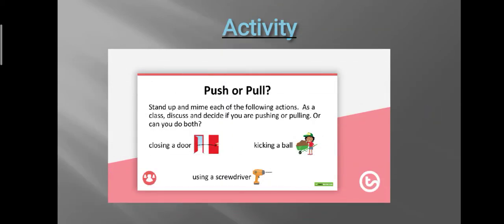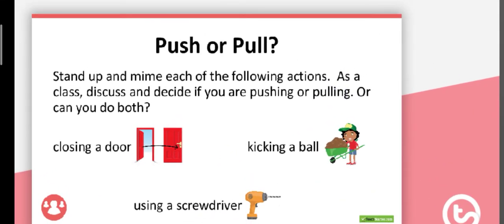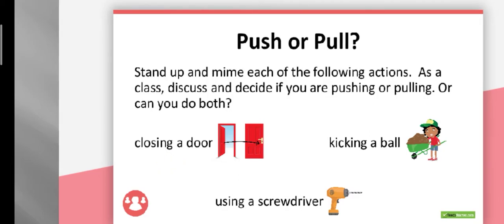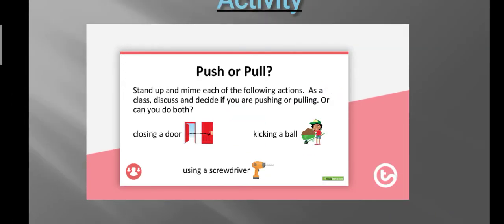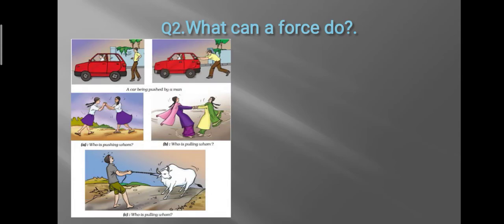Here is an activity you can do at home. Ask a friend to stand in a room and take turns — your friend pushes five objects and you pull five objects. For example, you can close a door by pushing it, kick a ball to push it, or screw a nut. You can play this game with classmates, family, siblings, or an elder brother or sister. It is a fun activity — do try it at home.